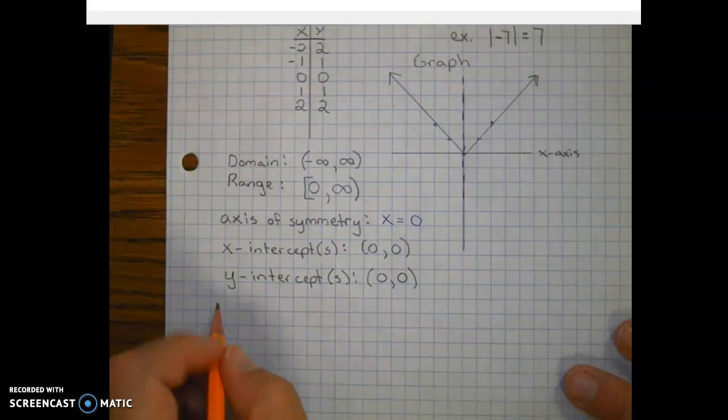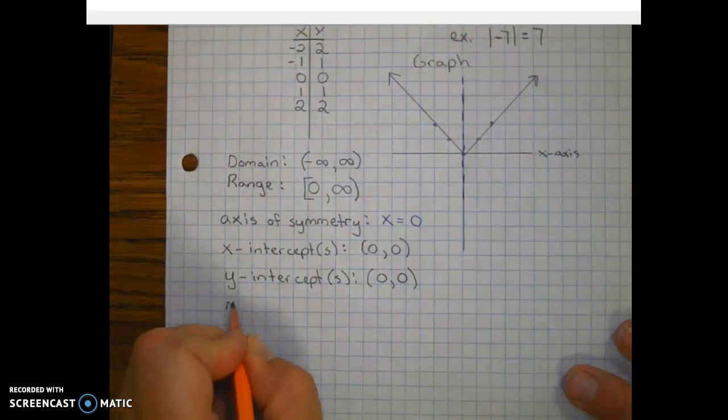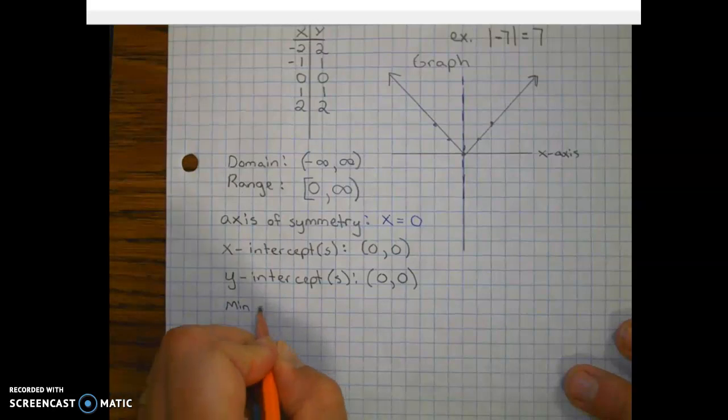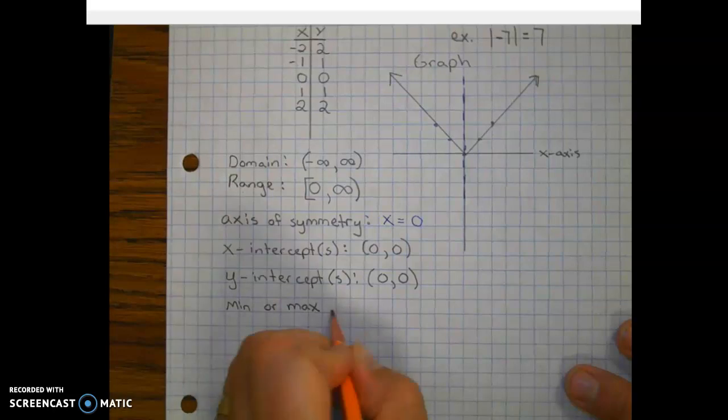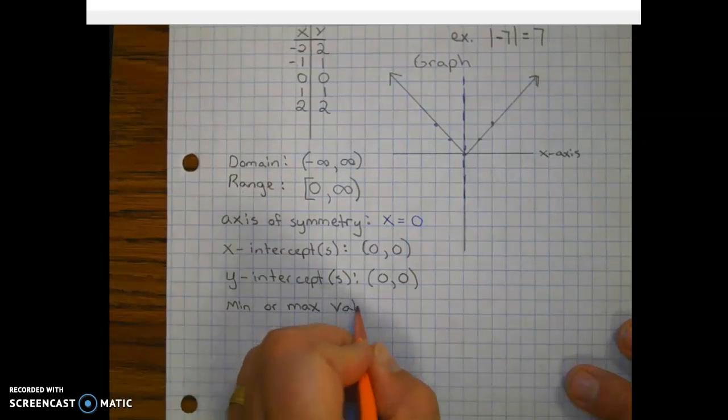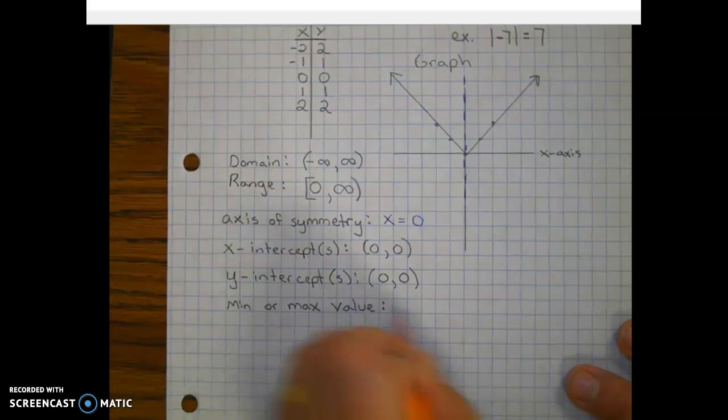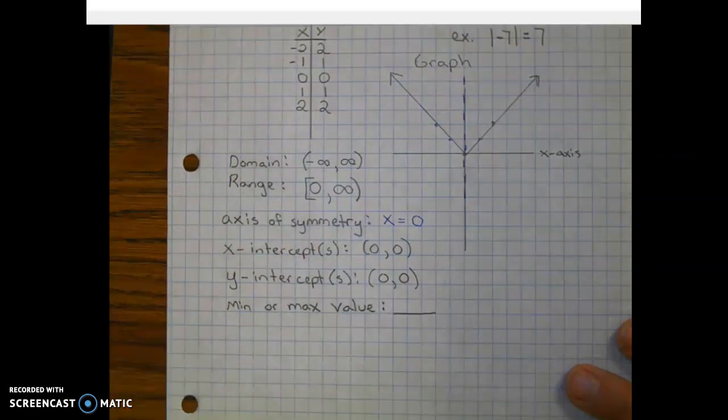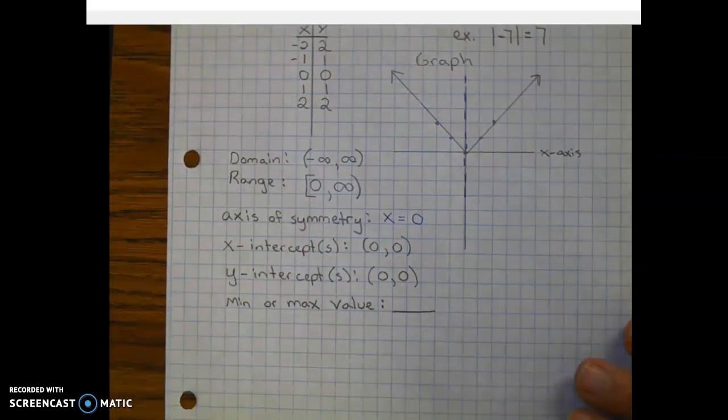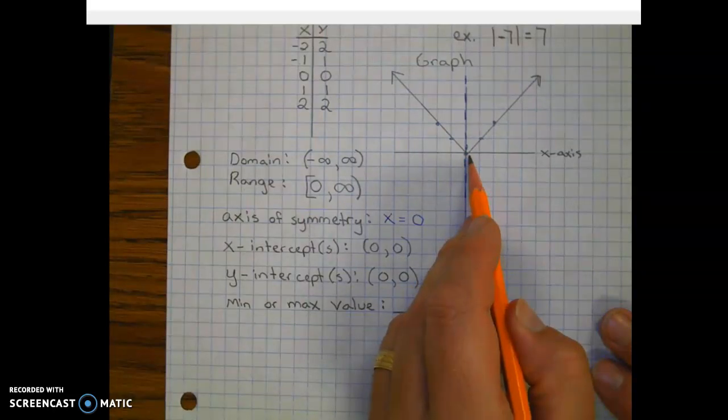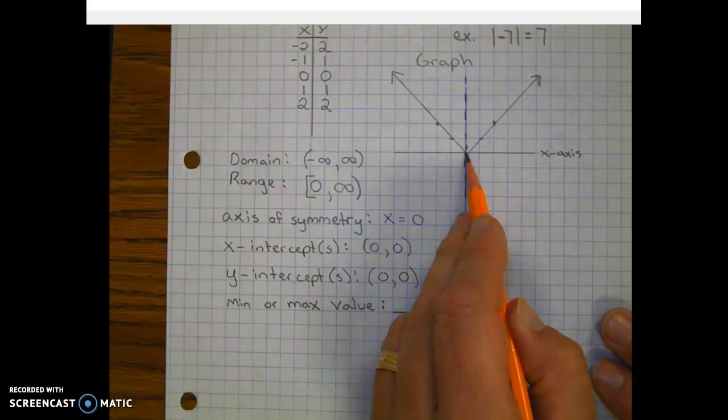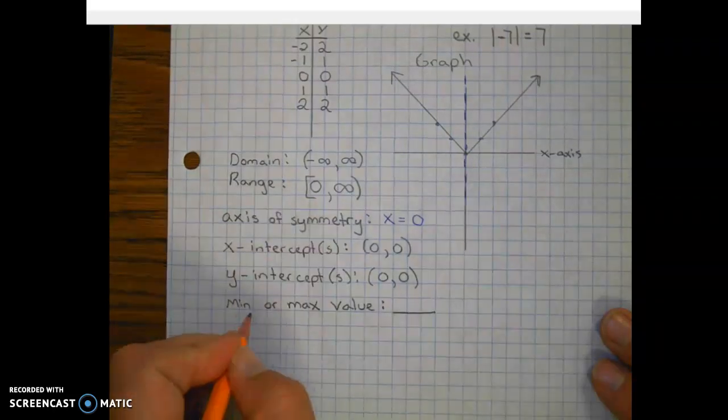Next, we have to determine if we have a minimum or a maximum. So like with the quadratic, we looked at the vertex. Well, in this case, similar to a vertex, we look for this point here. And in this case, it's the lowest point. So that means that this has a minimum.